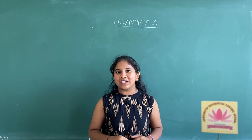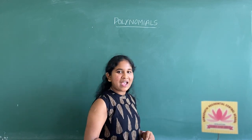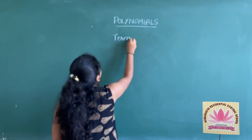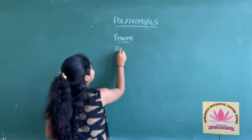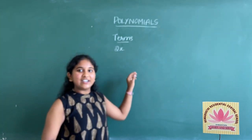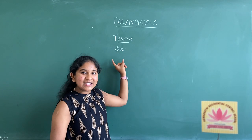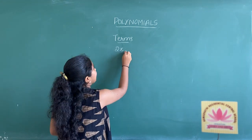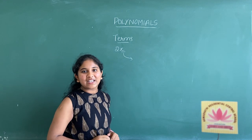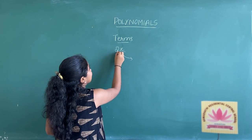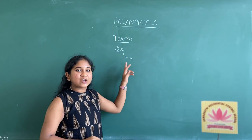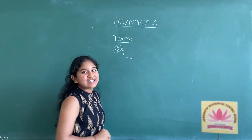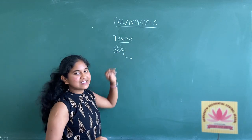When it comes to polynomials, you should know about terms. What are terms? Terms are like 2x. In this term it consists of two types: one is a variable, which is an alphabet, and one more — that is 2. We can say 2 is the coefficient of x. 2 is a constant and x is a variable.